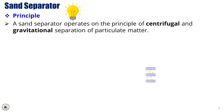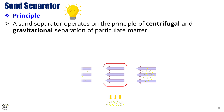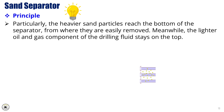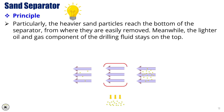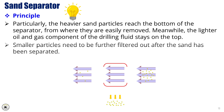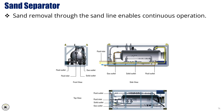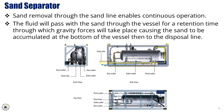Principle. A sand separator operates on the principle of centrifugal and gravitational separation of particulate matter. The separation is based on the weight of the particles, with heavier particles being pushed to the bottom while lighter ones stay on top. The heavier sand particles reach the bottom of the separator, from where they are easily removed. Meanwhile, the lighter oil and gas components stay on top. Smaller particles need to be further filtered after the sand has been separated. Sand removal through the sand line enables continuous operation, with gravity forces causing sand to accumulate at the bottom of the vessel and then pass to the disposal line.